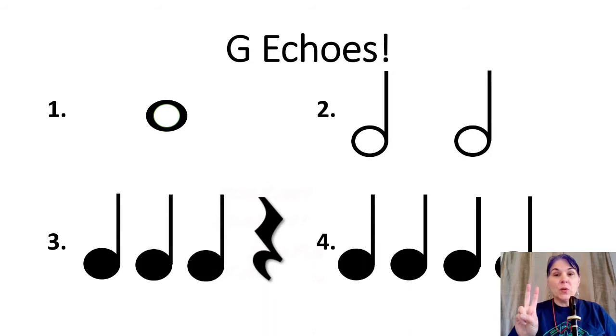Number two is two half notes. Each half note is worth two beats, so it will sound like this: do do do. There's number two on G. Your turn, ready, go.